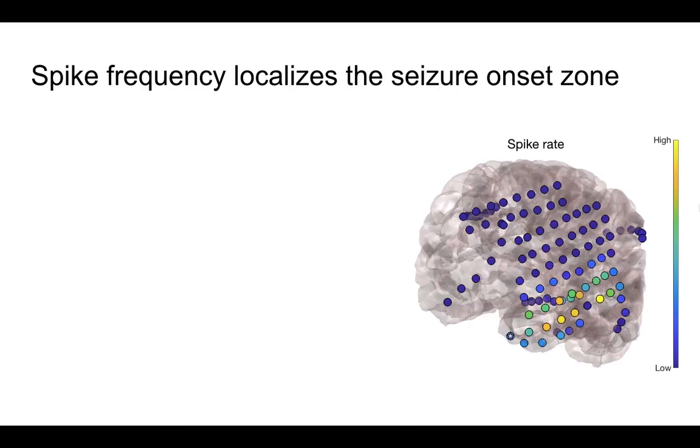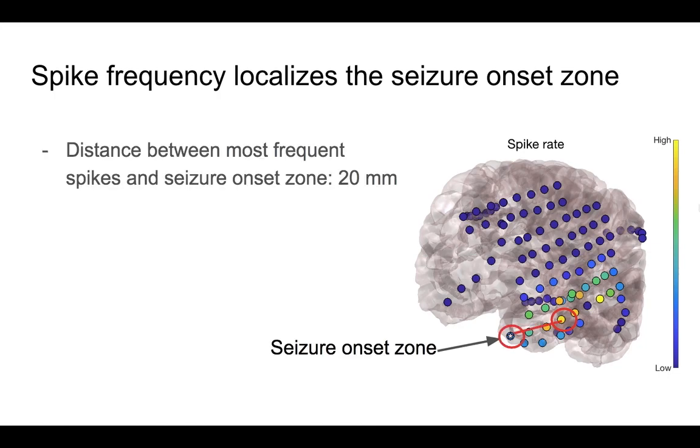Finally, we tried to answer whether spikes help localize the seizure onset zone. We first looked at spike frequency, and we found that the electrodes with the most frequent spikes were closer to the seizure onset zone than predicted by chance, about two centimeters away.